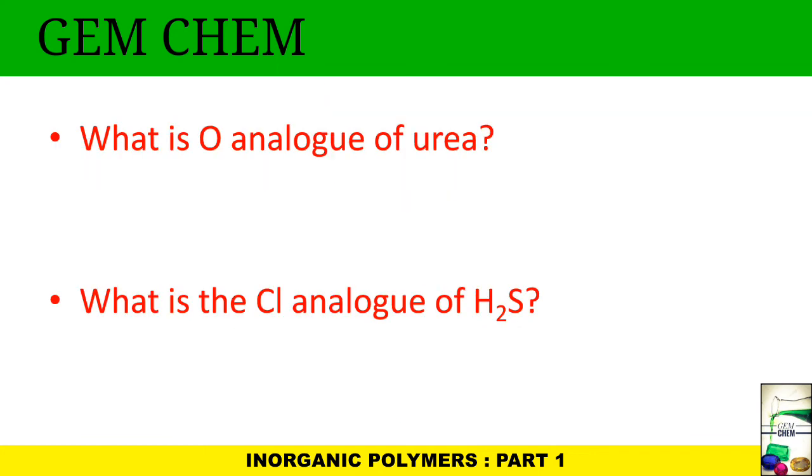First question, if you see: What is oxygen analog of urea? What is analog? What do we mean by analog? In order to get the analog, we need to know the elements. We know that hydrogen, helium, lithium, beryllium, boron, carbon, nitrogen, oxygen.